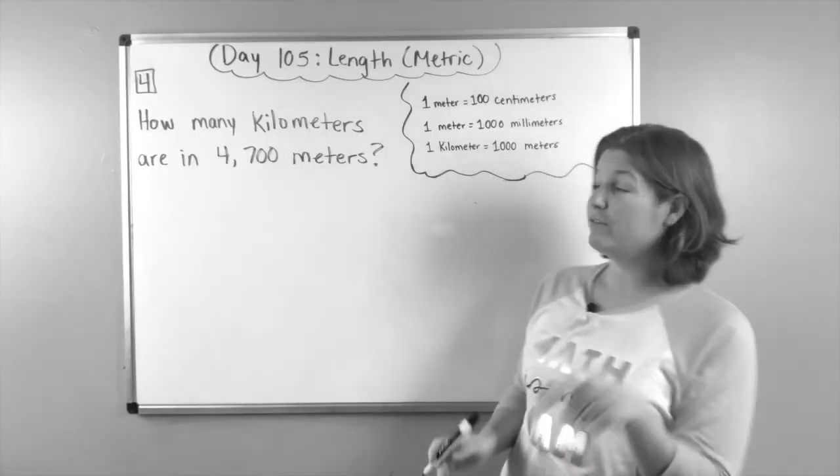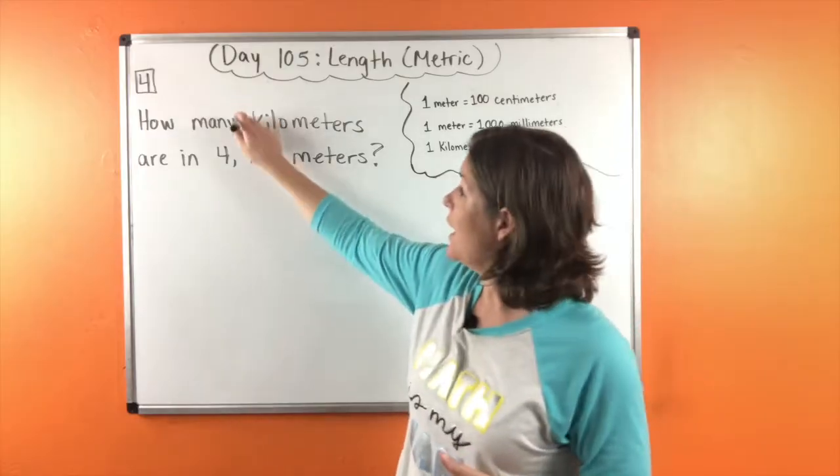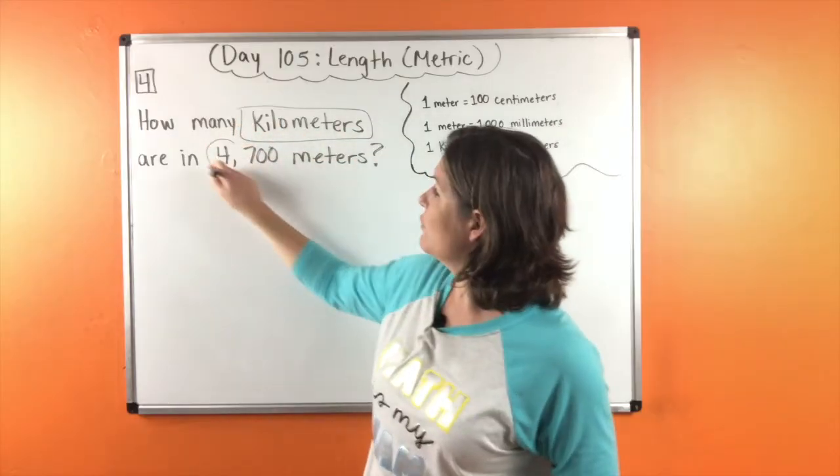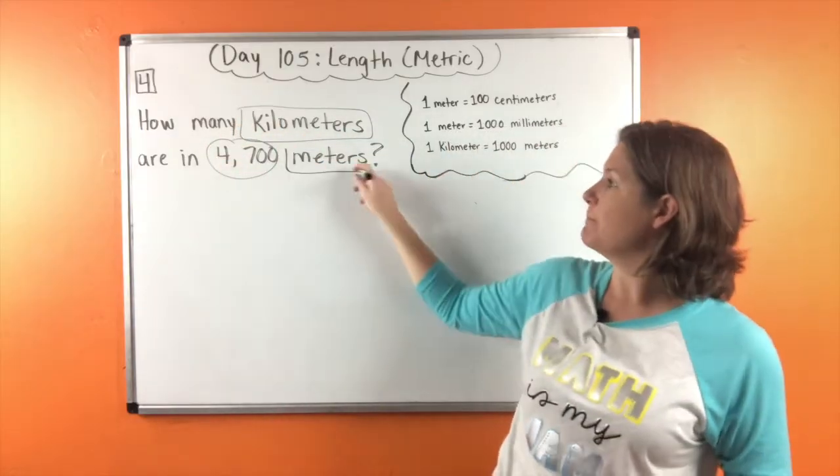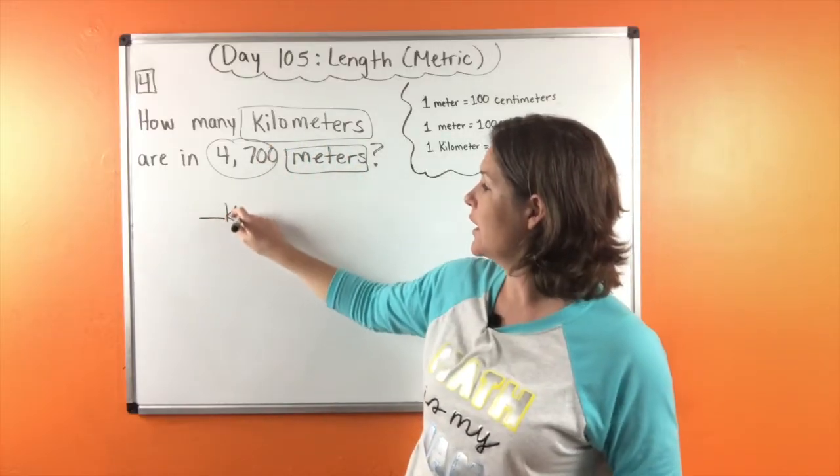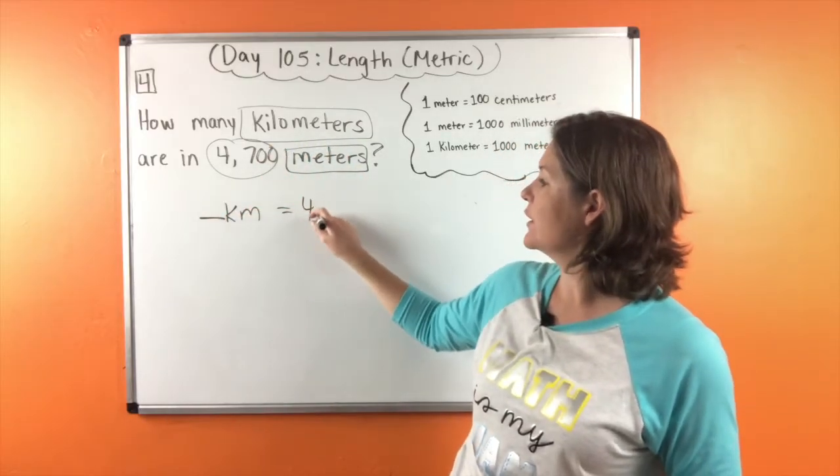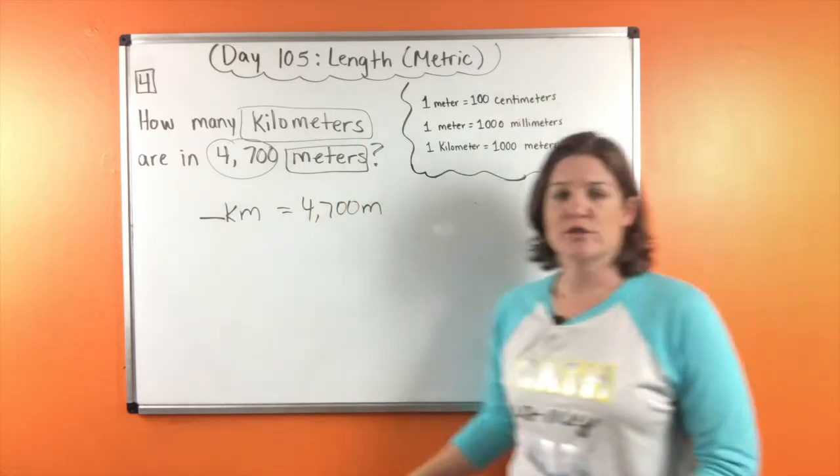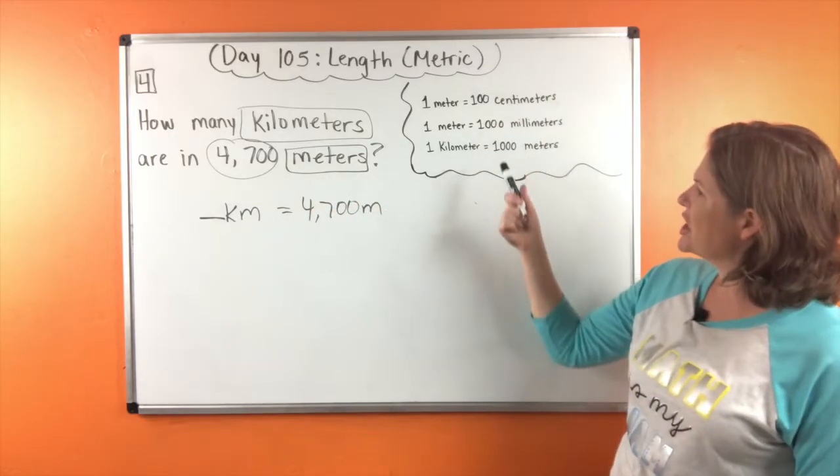All right, go ahead and help me out with number four. It says how many kilometers are in 4,700 meters? Let's rewrite that as how many kilometers are in 4,700 meters. So let's find the one that has kilometers and meters.